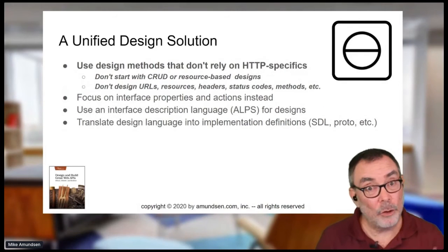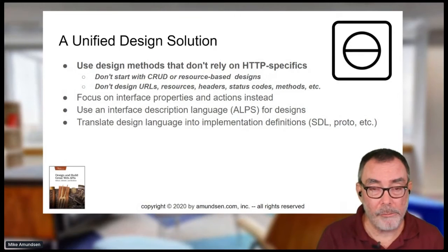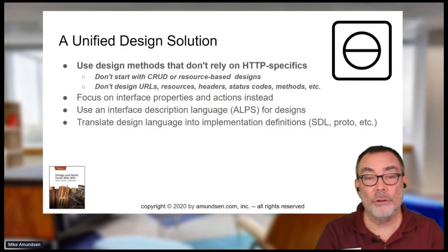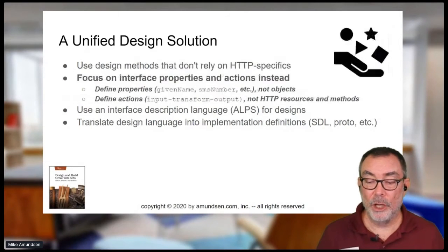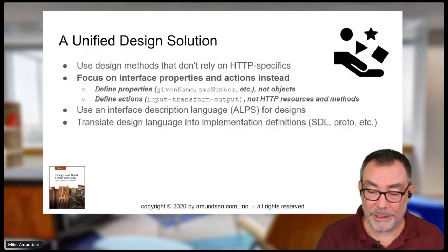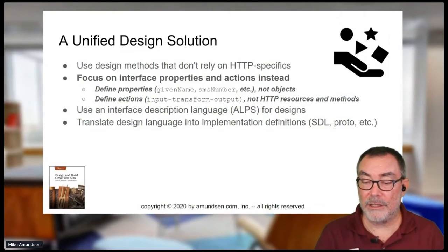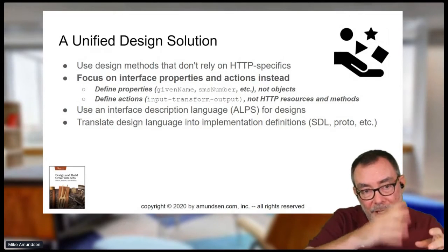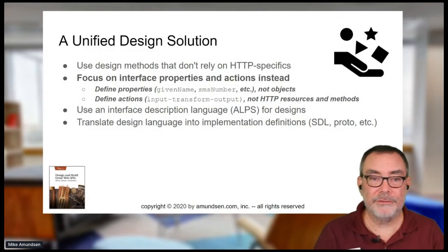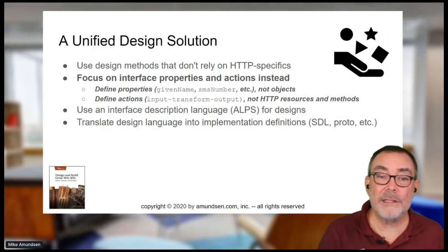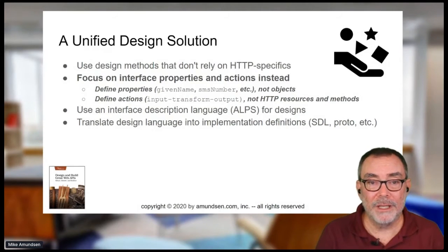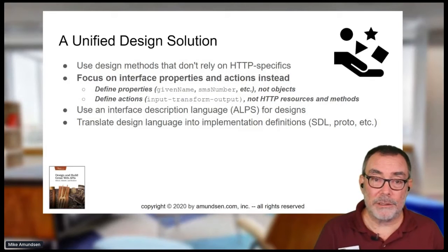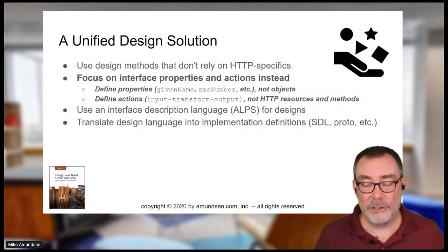We need to use design methods that don't rely on HTTP as their elements. Don't start with CRUD — create, read, update, delete — or resource designs. Don't manage URLs, status codes, or any of that. That gets handled by the implementation folks. Instead, focus on actions and properties: properties like given name and SMS number — the actual things we exchange — and actions like submit, approve, write, remove, and move — the real verbs of the domain. This is why we have domain-driven design: to design in the language of the domain, not the language of a protocol.